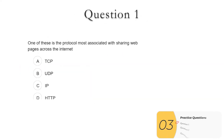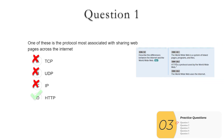Question one: one of these is the protocol most associated with sharing web pages across the internet. IP, UDP, and TCP are all protocols, and in fact if you're going to look at a webpage you'll use IP and TCP, but the one most associated with web pages is HTTP. So the answer is HTTP — D.